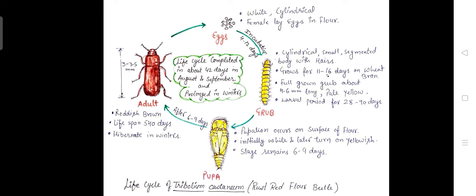After 6 to 9 days, a reddish brown adult emerges from the pupa with a lifespan of 540 days and a length of 3 to 3.5 mm. This adult hibernates in winter. The complete life cycle takes 42 days in August and September and is prolonged in winter.